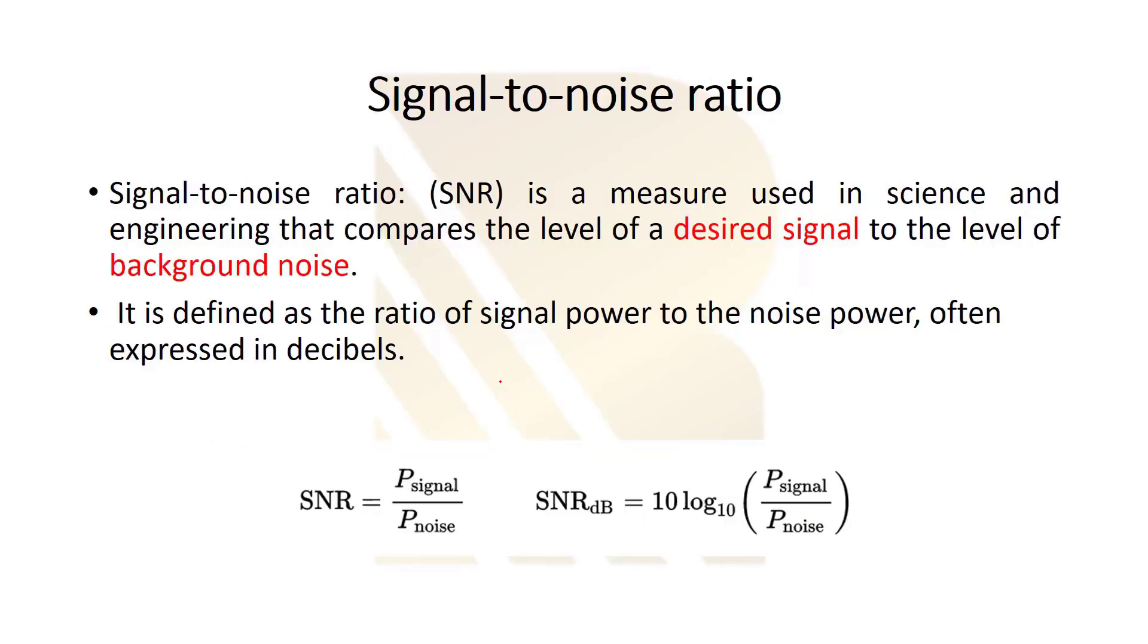I want to talk about the signal-to-noise ratio, because it's one of the important topics that we have to know in RF design, which is called SNR. It's a measure used in science and engineering that compares the level of desired signal to the level of background noise. SNR is basically the power of signal to the power of noise. Imagine we have a signal with smaller amplitude and we have a signal which has high amplitude, and we combine this with noise, which is the same for both. Here we have SNR1 and here we have SNR2.